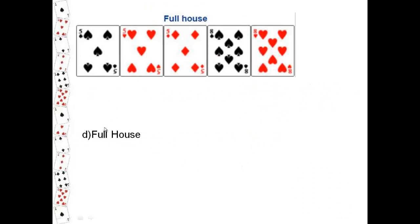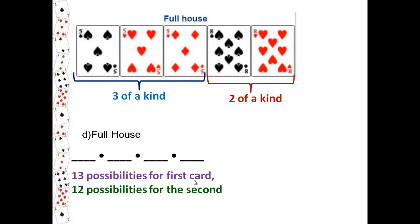Lastly, they ask you to figure out how many full house hands you could possibly have. This is where I ran into a little difficulty, but I get it now, so hopefully I can explain it to you. A full house is three of a kind and two of a kind. For a full house, you have thirteen possibilities for the first denomination and twelve possibilities for the second. So right away we have thirteen times twelve.